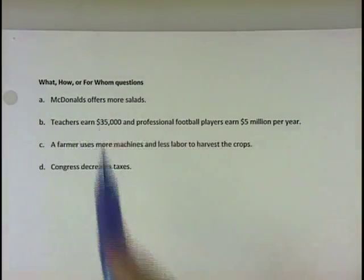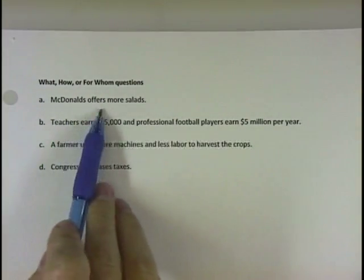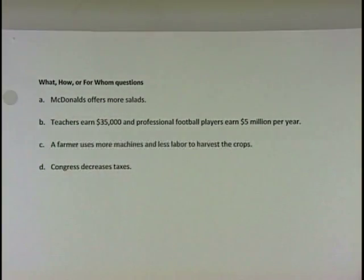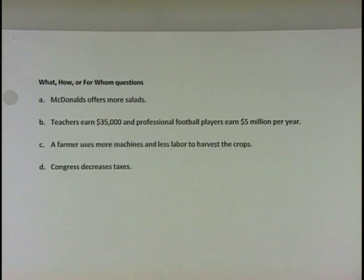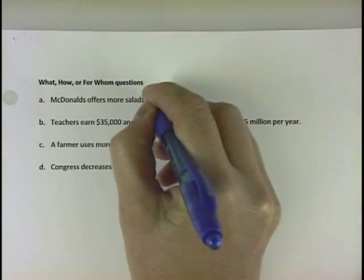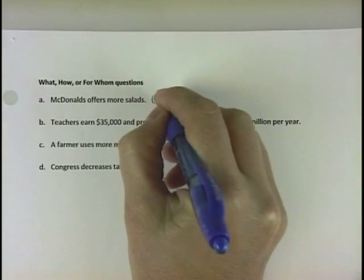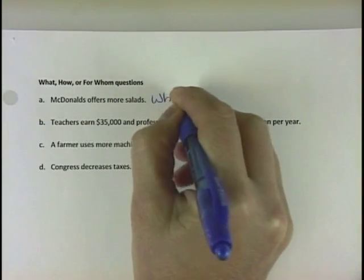So: what, how, or for whom to produce? The first example says McDonald's offers more salads. In this one, we're asking what are they going to use their resources to produce? They could produce more french fries or more salads. So that's a choice of what to produce.